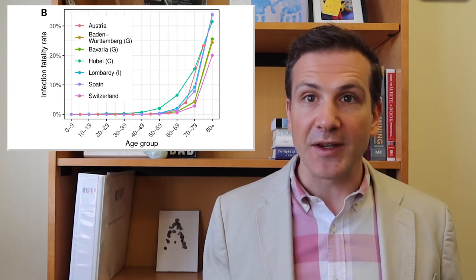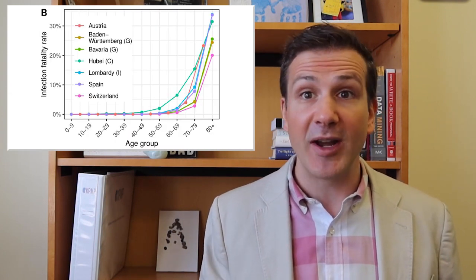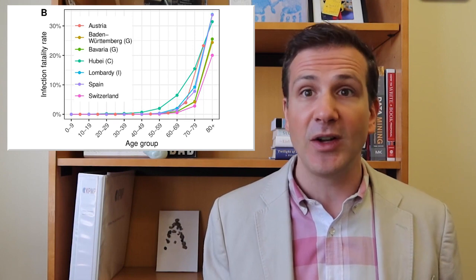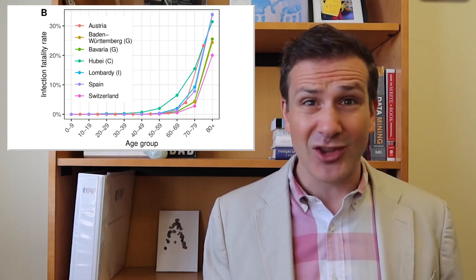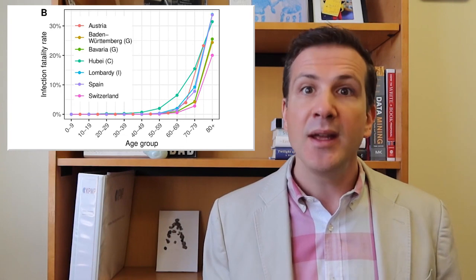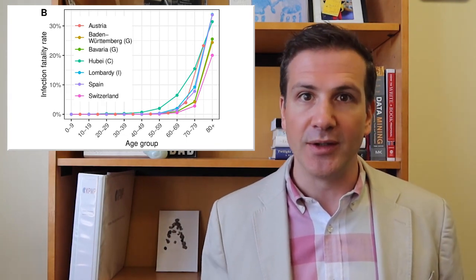The authors also do us a service by translating the infection fatality rate across age groups. Here the data is fairly concerning, showing 10-30% mortality, call it true mortality if you want, among those 70 years and older.